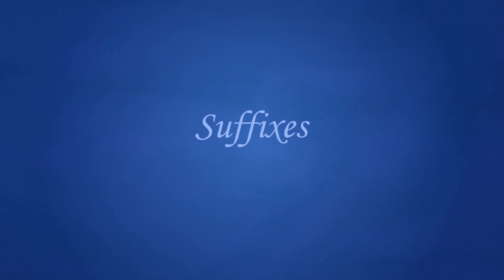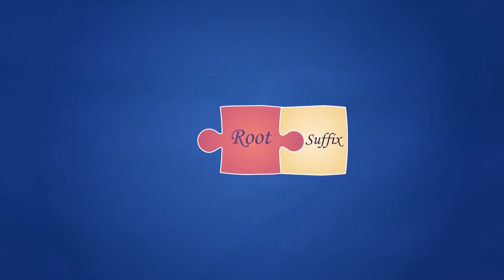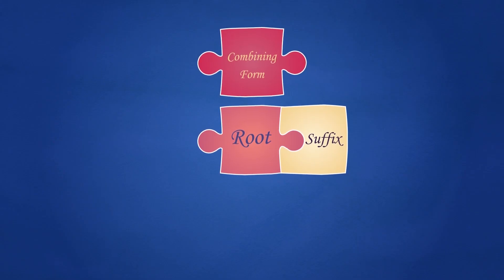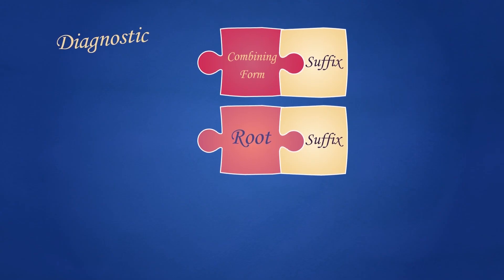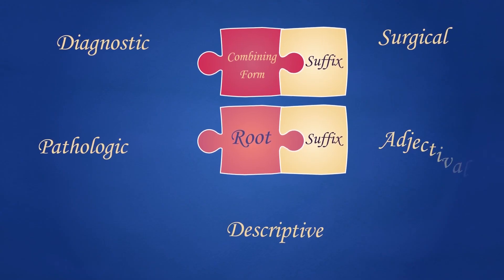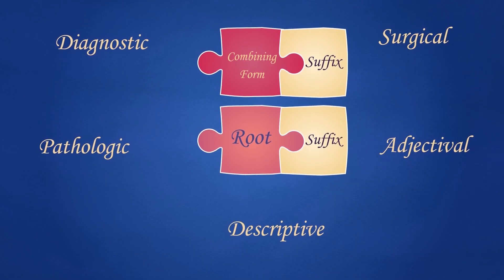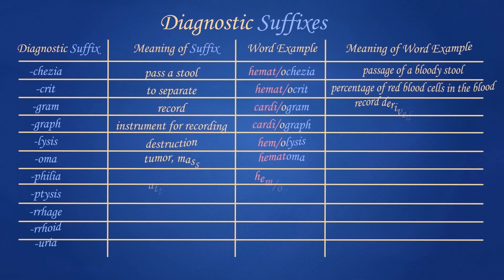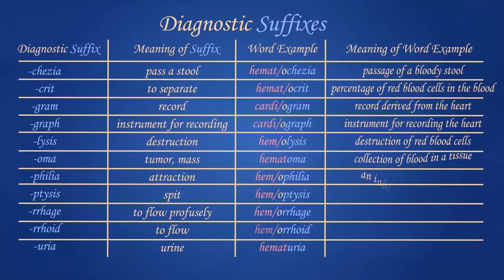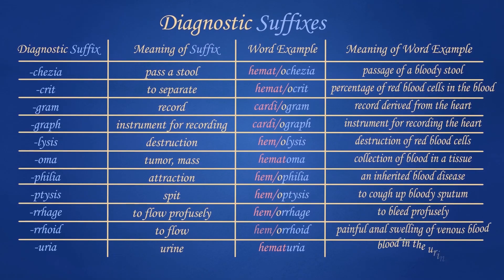Next, we are going to talk about suffixes. A suffix is added to the end of a medical root or a combining form to modify its meaning and to change its part of speech, and most medical words contain a suffix. Medical suffixes can be organized by their purpose or function, such as diagnostic, surgical, pathologic, and descriptive or adjectival. For the diagnostic suffixes, when added to a root or combining form, they produce a medical term that is a diagnosis, or a procedure or test to identify the nature of an illness.